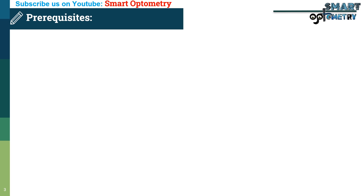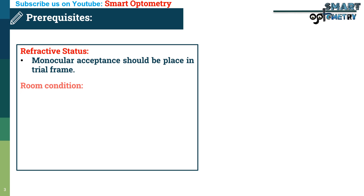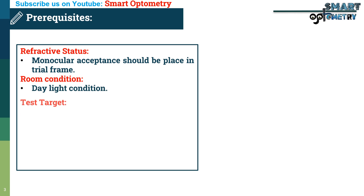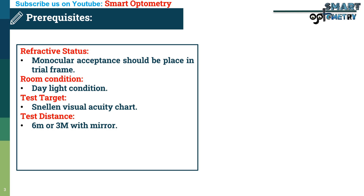The prerequisites of the test are: Refractive status — monocular acceptance should be placed in the trial frame. Room condition — daylight condition. Test target — Snellen visual acuity chart. Test distance — 6 metre or 3 metre room with mirror. Trial box — containing trial lenses, trial frame, and occluder.